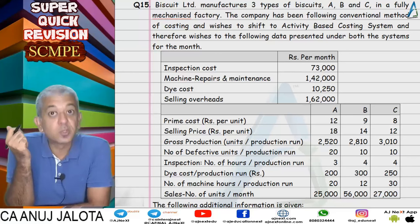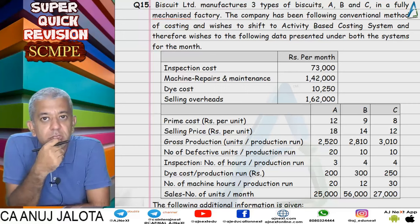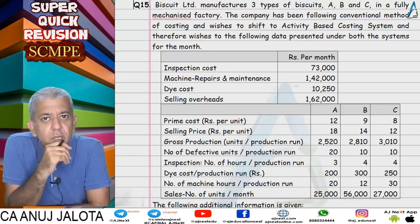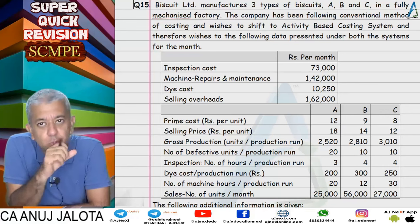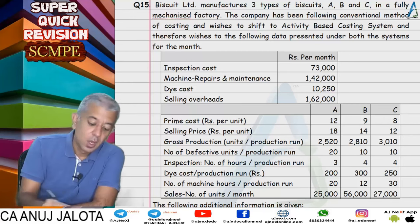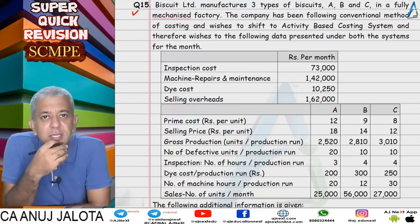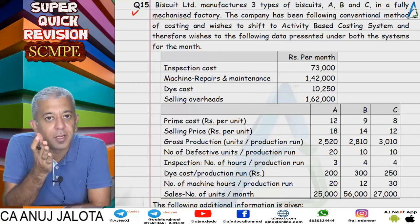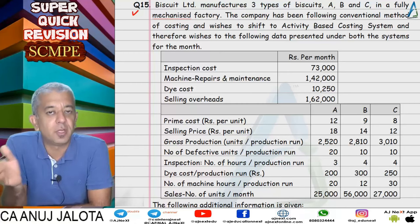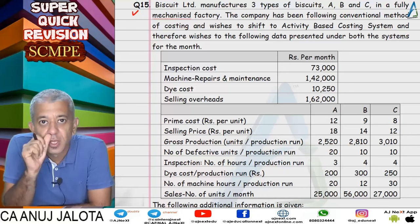Welcome back to our super quick revision series on activity based costing. We have covered two lectures so far — in the first I covered all the concepts, in the second we covered the first few questions. Let's continue with question number 15. This was an easy question where you had three products A, B, C and had to find out product-wise profitability and rank the products.